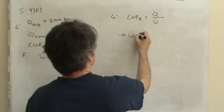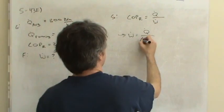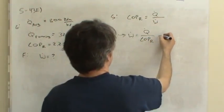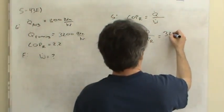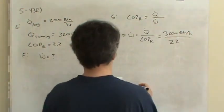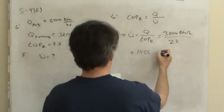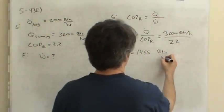So all we have to do is rearrange this to solve for the power input, and it would be the heat flow rate divided by the coefficient of performance of the refrigeration system. So that's 3,200 BTUs per hour over 2.2. When you plug that in your calculator, the power input is 1,455 BTUs per hour.